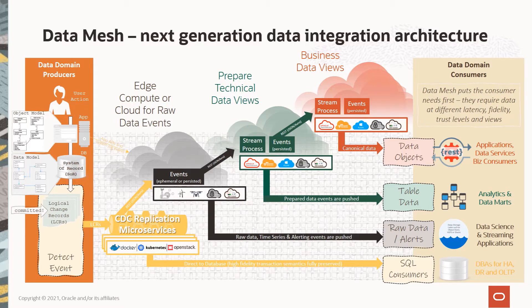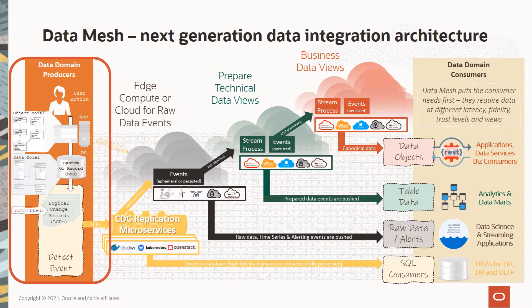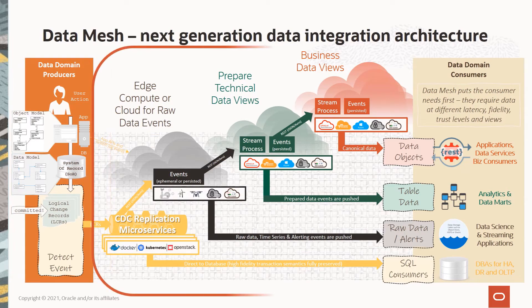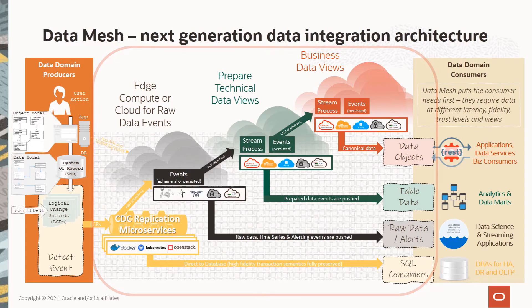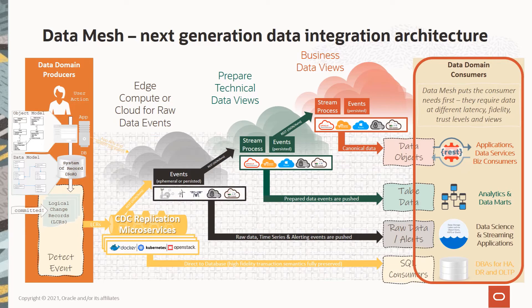If you look at the left side of the diagram, data is input into the mesh as a constant stream of events from relational databases and other inputs like sensors or social media feeds. In the middle, actions are initiated to enhance and transform the data in flight. On the right side, that data is then packaged in different formats depending on the needs of the end user. Data mesh is the future of data integration, and GoldenGate and Stream Analytics are key components in that architecture.